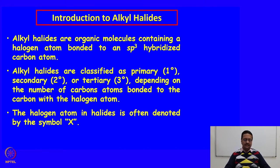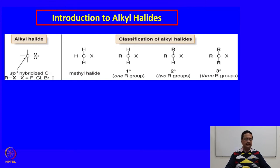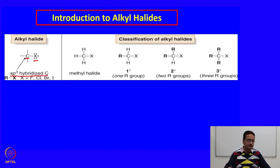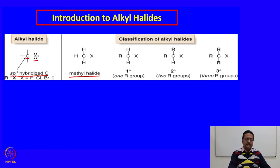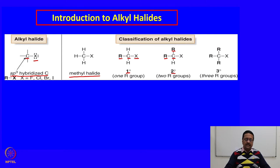The halogen atom in a halide is denoted by the symbol X. An alkyl halide has a halogen atom connected to an sp3 hybridized, tetrahedral carbon atom. The simplest alkyl halide is methyl halide, formed by replacing one hydrogen of methane with a halogen. When one alkyl group is connected to the carbon bearing the halogen, we call it a primary (1°) halide. With two alkyl groups it is a secondary (2°) halide, and with three alkyl groups it is a tertiary (3°) halide.